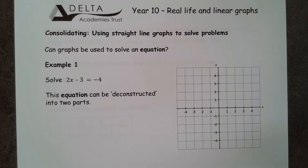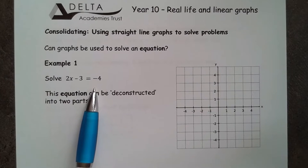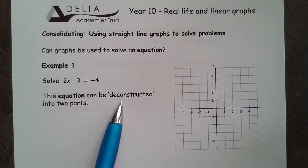So this one looks quite complicated. We've got a situation where we've got 2x minus 3 is equal to negative 4. What I'm going to do is deconstruct this question because what we're used to seeing for equations of lines is that y equals those things.